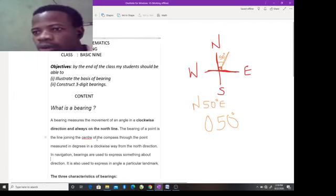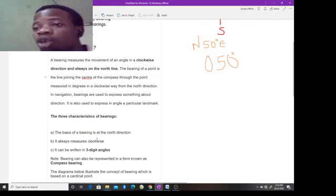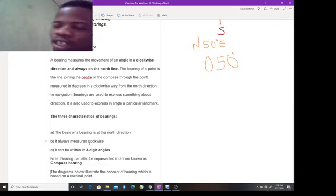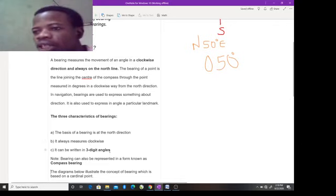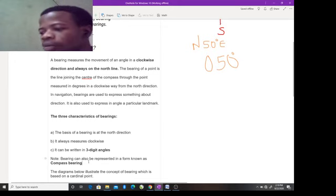Let's quickly stress something on bearing here. We have the characteristics. I said bearing is the point in the line joining the center of the compass through the point measured in degrees in a clockwise way from the north direction. We have three characteristics of bearing. One, the basis of bearing is at the north direction. I've mentioned that in my illustration. Two, it always measures clockwise. It's measured in clockwise form, so it takes the clockwise direction. And it can be written in three-digit angles basically, but it can also be written in compass bearing form.